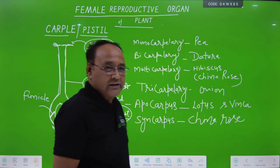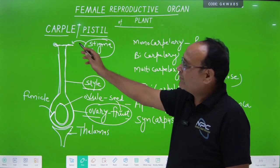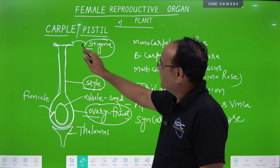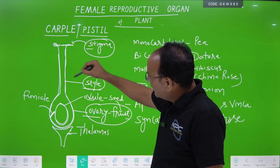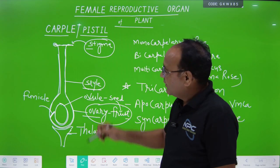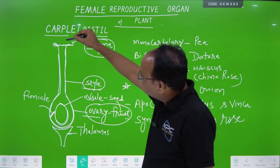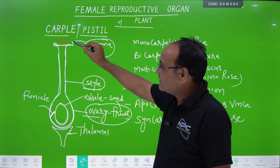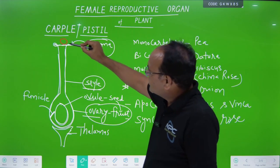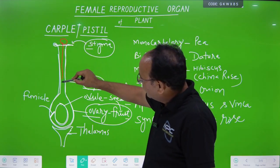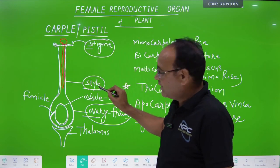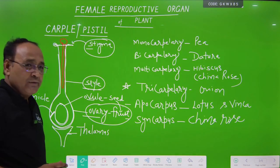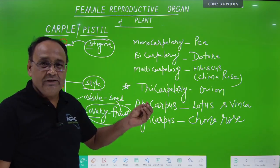What is the function of stigma? Stigma receives the pollen grains during pollination. The second part, the cylindrical style, gives the passage to the pollen grain. Pollen grains are received at the stigma, germination occurs there, and when the pollen grain germinates, it forms a special tube-like structure called the pollen tube. The pollen tube then enters through the style toward the ovule.